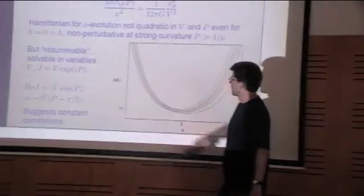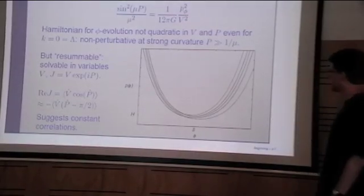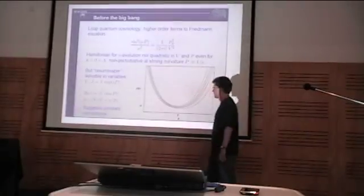But by having a different set of variables, one can in some way resum the whole expansion and still have a solvable system which is harmonic. So also in this case, it is exactly solvable, but just not in the original variables, but in variables of this form.